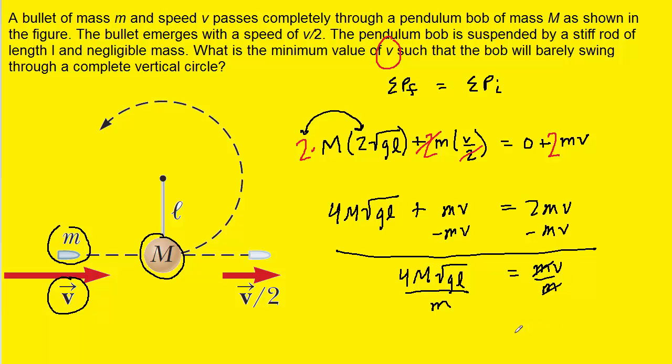It'll cancel out on the right-hand side. And we can therefore see that the velocity that the question is asking for is simply 4 times the mass of the bob, times the square root of GL, all divided by lowercase m.